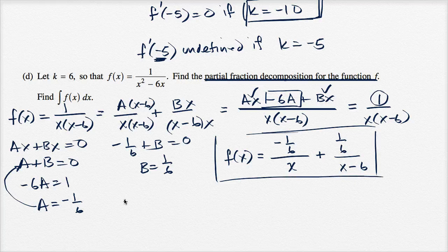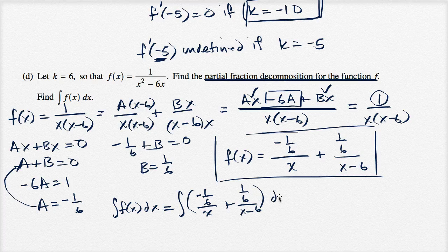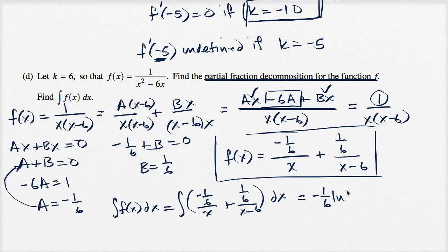To evaluate the integral of f of x, the partial fraction decomposition is valuable. The indefinite integral becomes the integral of negative one sixth over x plus one sixth over x minus six, dx. The antiderivative of one over x is the natural log of the absolute value of x, so the first part gives negative one sixth times the natural log of the absolute value of x.